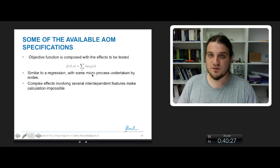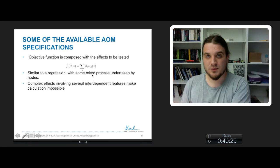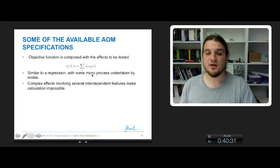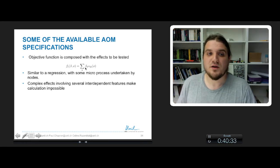you make a regression between the network structure configuration and some microprocesses undertaken by nodes. So in fact you say that the future configuration observed of your network will be the result of a combination of all these local process effects.